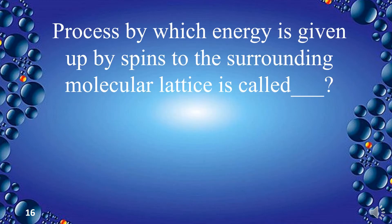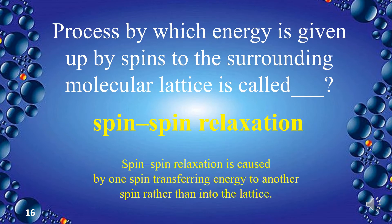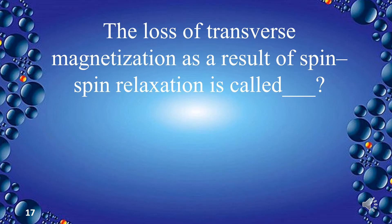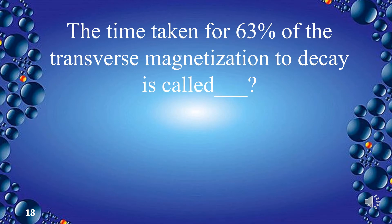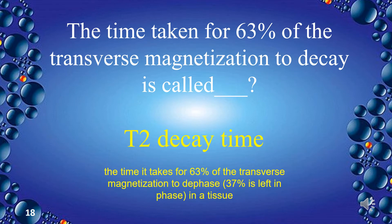The process by which energy is given up by spins to surrounding spins rather than into the lattice is called spin-spin relaxation. What is the loss of transverse magnetization as a result of spin-spin relaxation? That is defined as T2 decay. The time taken for 63% of the transverse magnetization to decay is called T2 decay time.